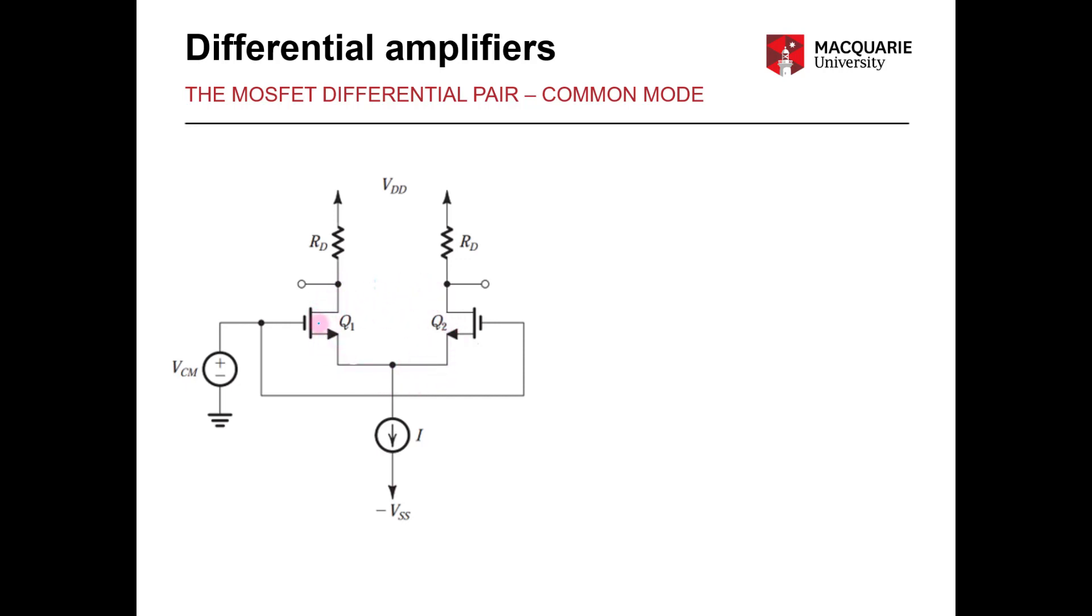You can see it consists of two transistors Q1 and Q2, a current source, and we've represented our common mode input as a single voltage, VCM, connected to the gate terminals of both transistors, that is VG1 and VG2.